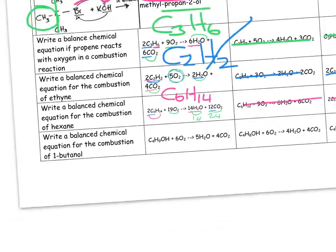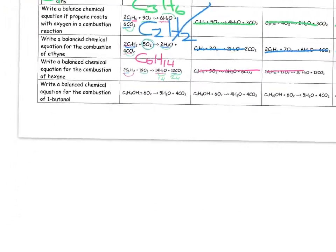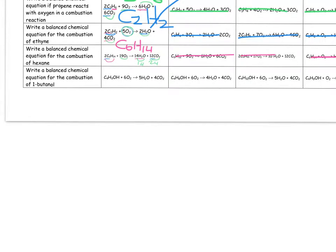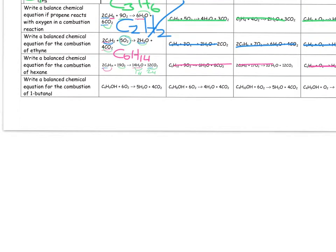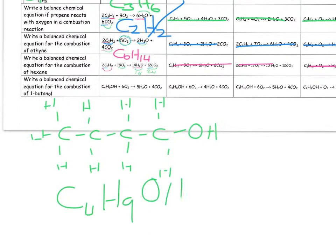Now if we take a look at write a balanced chemical equation for the combustion of butanol, well first we need to have butanol, and butanol is going to be, it'll look like this. So that is 1, 2, 3, 4, 5, 6, 7, 8, 9, 10, 9, sorry. So it's going to be C4H9 and then the OH group hanging off the end.